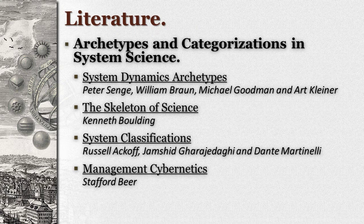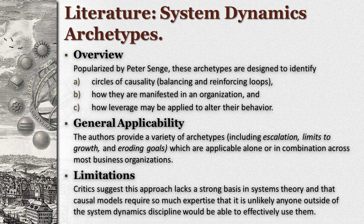The idea of archetypes is not a foreign concept in the domain of system science. Many different classifications and models have been developed that are specifically designed to discriminate between systems based on their structures, behaviors, or capabilities. Each of these approaches has its own benefits and limitations. The first of these classification systems comes from Peter Senge, who devised the system dynamics archetypes. His models focus on causal loops within a system that either balance or reinforce a course of action.